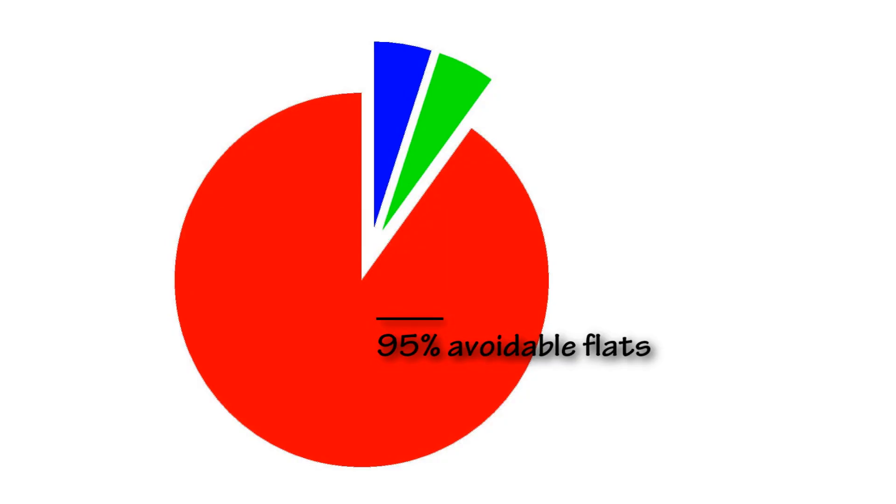Have you ever had a flat tire on your bike? Let's try to figure out how we can avoid getting flat tires and how to deal with them when they do occur. Flat tires are the single most debilitating event that can happen to you while you're riding your bike. It's very important that every cyclist knows how to deal with a flat tire when it does occur and how to avoid getting those flat tires.